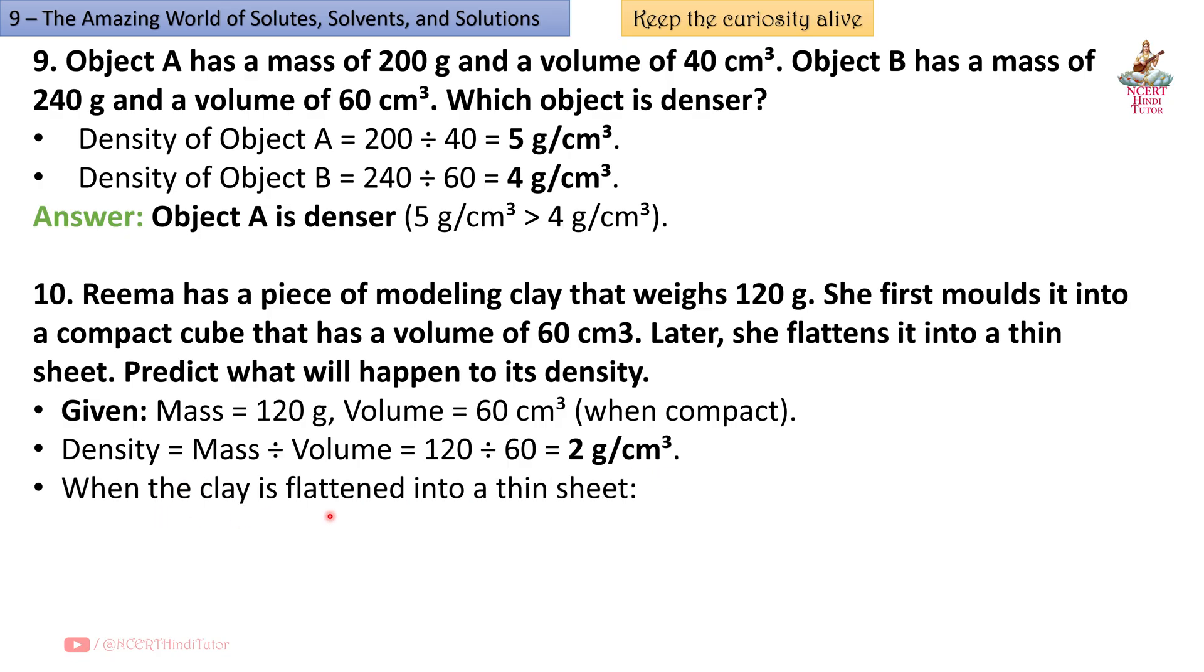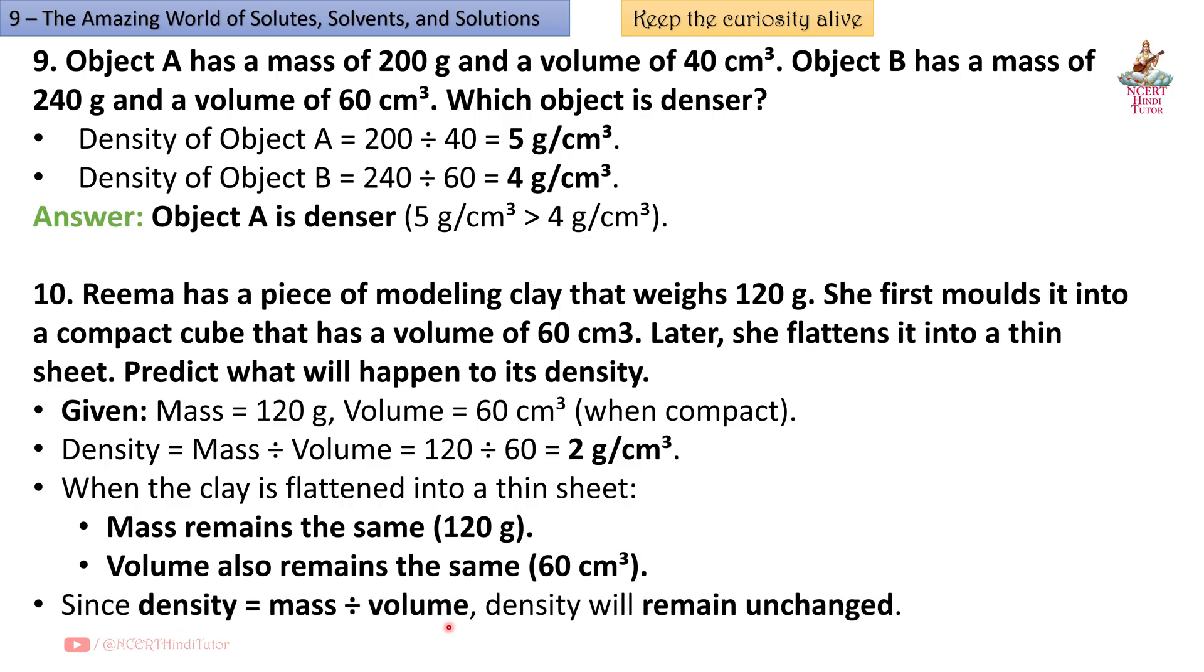When the clay is flattened into a thin sheet, mass remains the same 120 g, volume also remains the same 60 cm cube. Since density equals mass divided by volume, density will remain unchanged. The density of the clay remains 2 g per cm cube regardless of its shape.